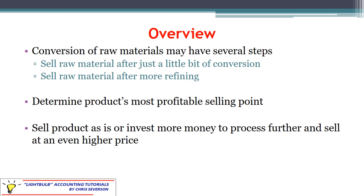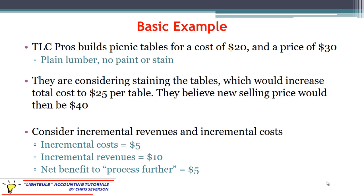Even though they are going to be selling at a higher price if they process further, it's also going to take an additional investment to get that higher price. So let's take a look at a basic example. TLC Pros builds picnic tables for a cost of $20 and a price of $30 — a plain lumber picnic table with no paint, no stain, no finishing. They are considering adding a stained picnic table to their product line, which increases the total cost to $25 per table, with a new selling price of $40.